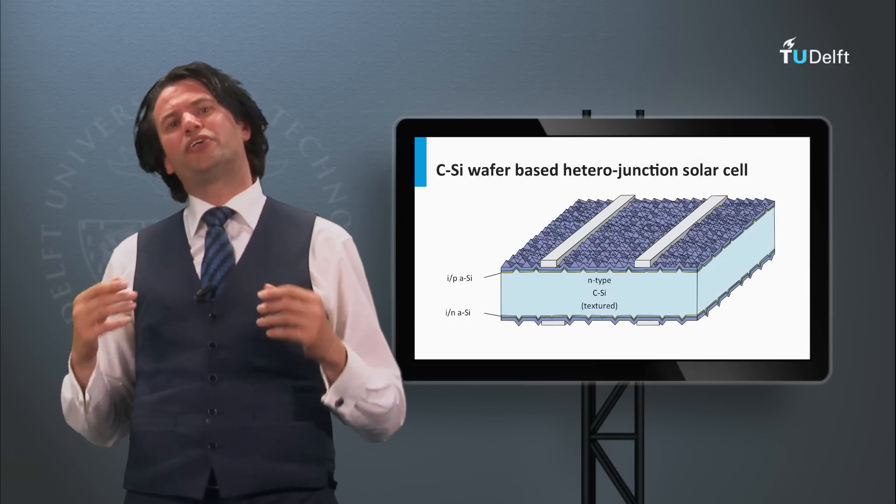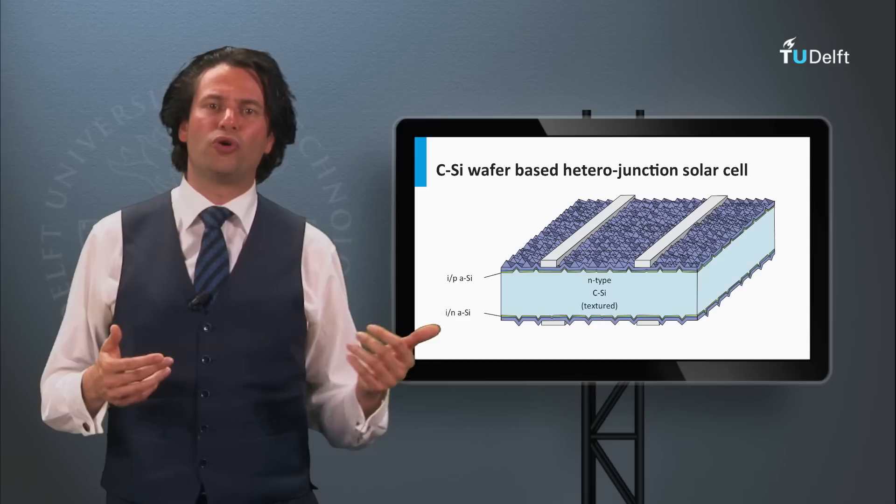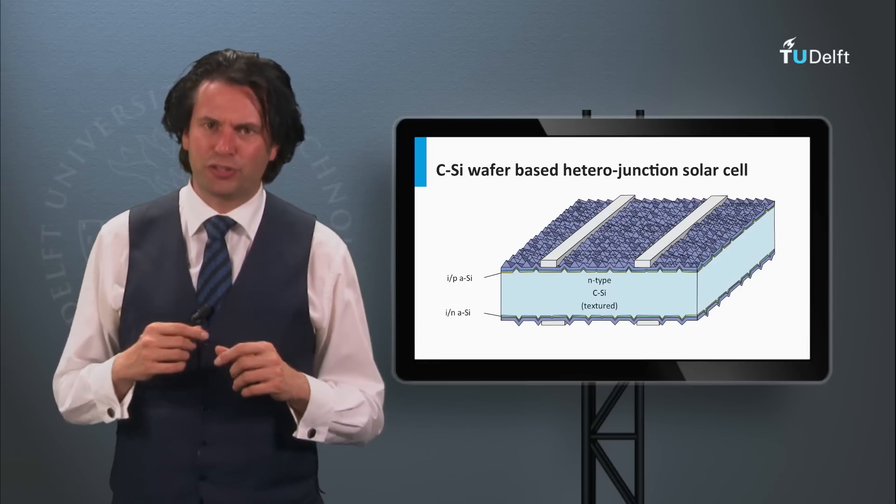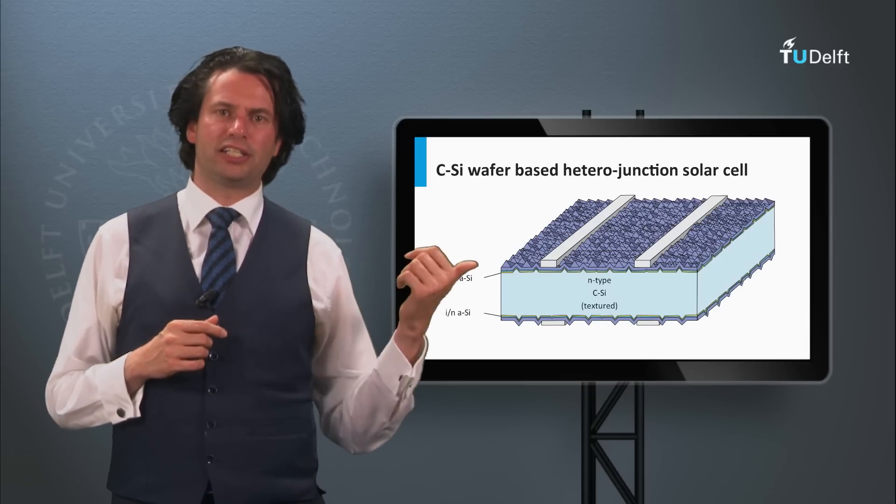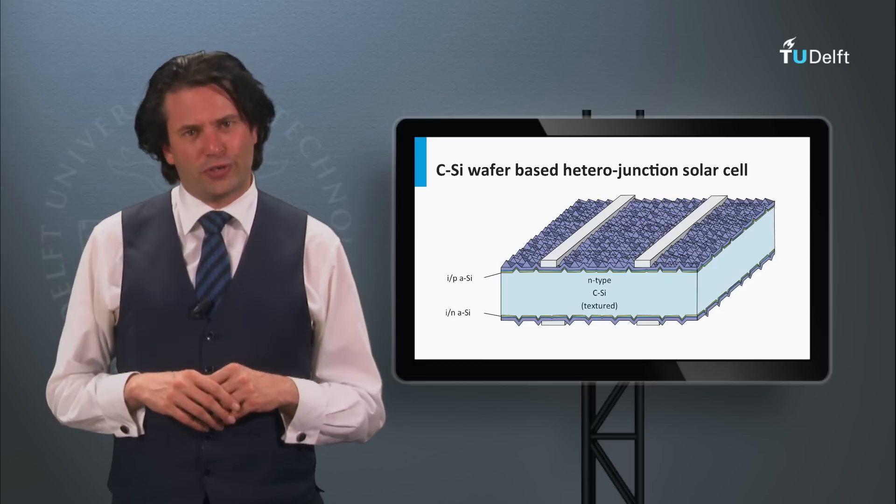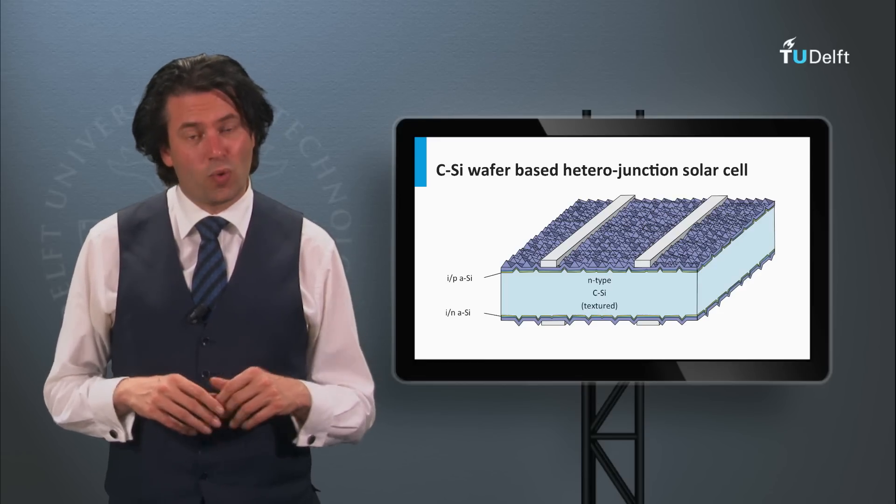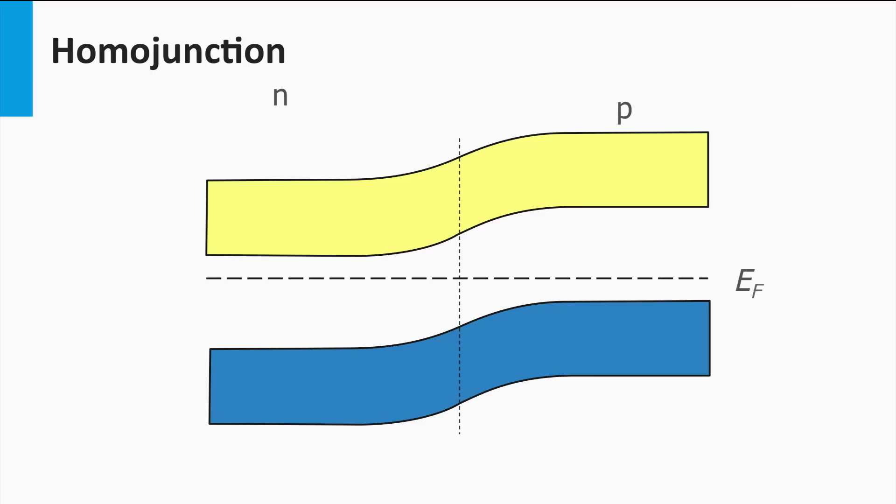An alternative concept with high efficiency is the crystalline wafer-based heterojunction solar cells, as you see in this illustration. First, I have to answer the question, what is a heterojunction? So far, I have introduced you to the concept of P-n junctions with a depletion zone. These junctions are fabricated by different doping types within the same semiconductor material. This means the band gap in the P-n doped material is the same. Such P-n junction is called a homojunction.